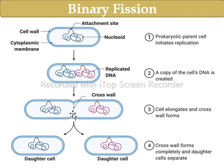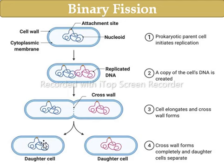The cross wall or transverse septum forms from the cell wall and cytoplasmic membrane. Then, sometime later, the transverse septum will completely form, creating two daughter bacterial cells. These are two bacterial cells formed through binary fission. The diagram shows how bacteria reproduce through binary fission.